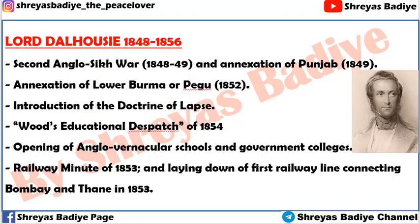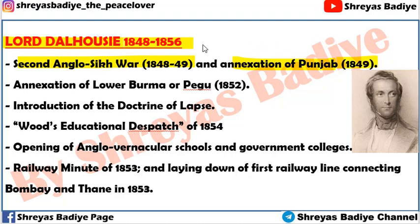Next is Lord Dalhousie, from 1848 to 1856. This is the period from which the most important questions of this topic are asked. The first major event was the Second Anglo-Sikh War, fought in 1848-1849, followed by the Annexation of Punjab in 1849 — Punjab was completely taken into the British East India Company.